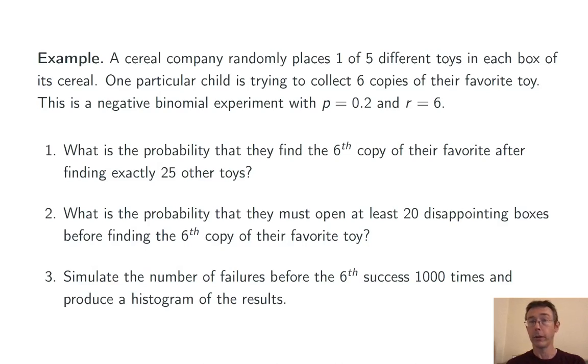Now I'm going to do this using a complement. I'm going to find the probability of less than 20 failures. In other words, the probability of less than or equal to 19 failures. And that's a pnbinom, a cumulative probability question.